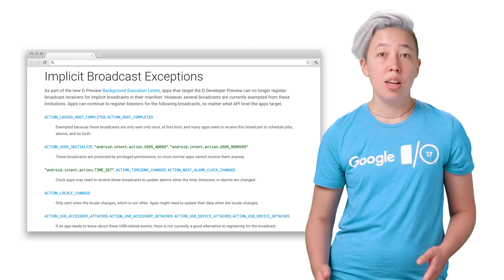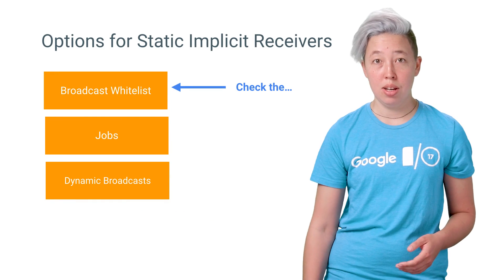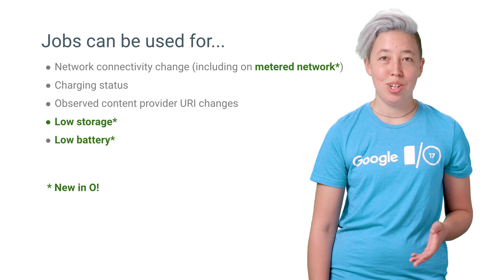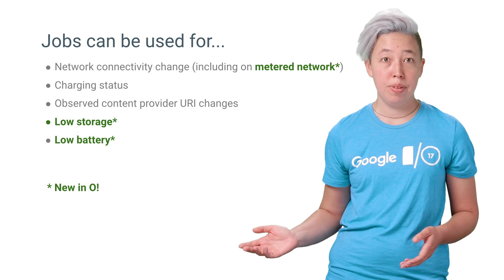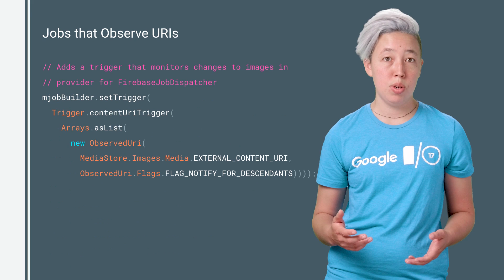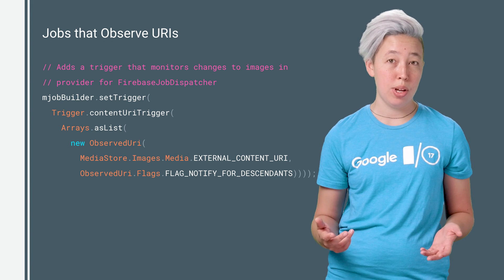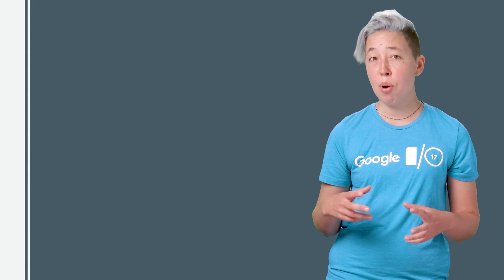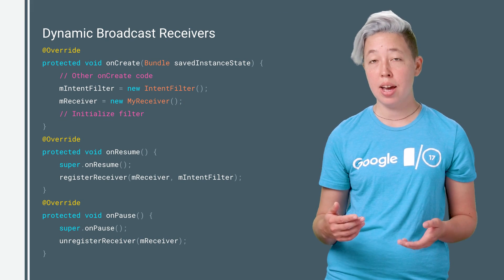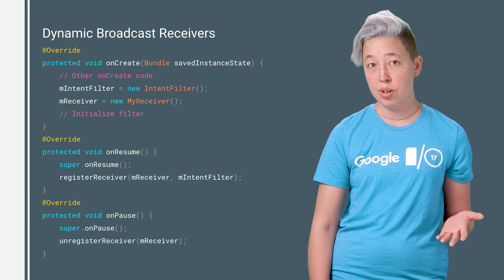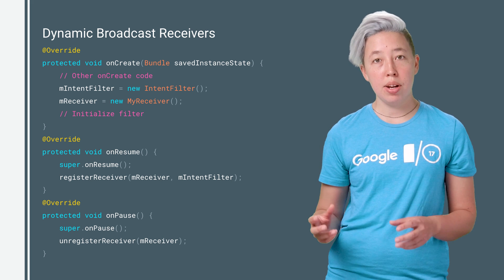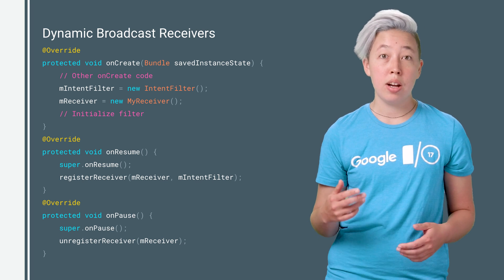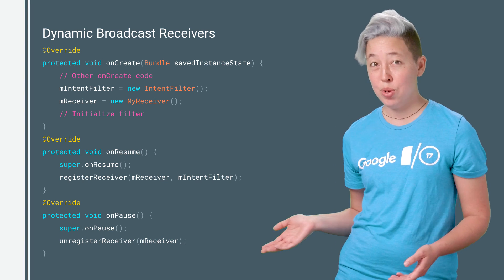If your broadcast is not on the exception list, you might be able to replace it with a job. Jobs can be triggered by the following conditions, some of which have been added in O. In particular, content provider observers can trigger jobs for a variety of situations, such as when the user saves a new picture on their phone. If part of your app is already running when the broadcast is sent, you can switch to a dynamic broadcast receiver instead. This means moving your broadcast receiver code out of the manifest, and then you create, register, and unregister it during runtime.